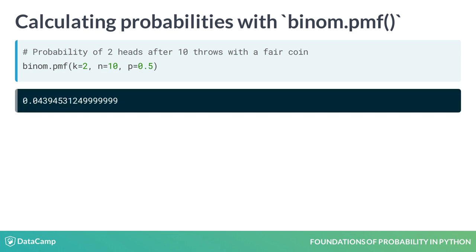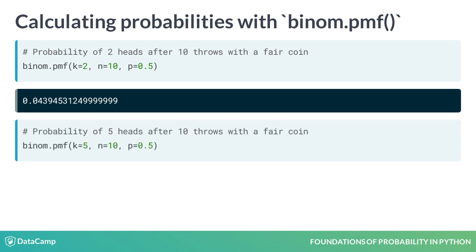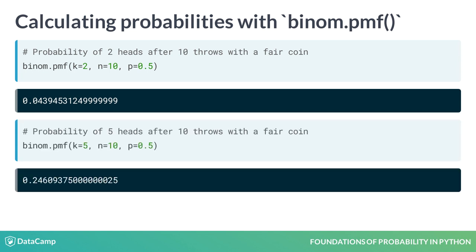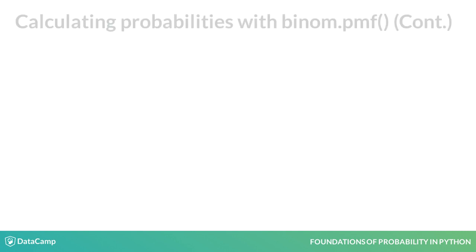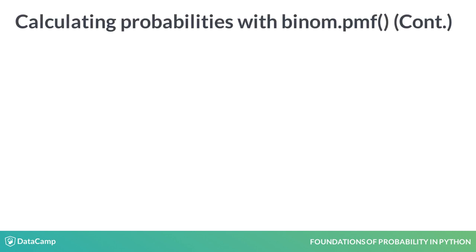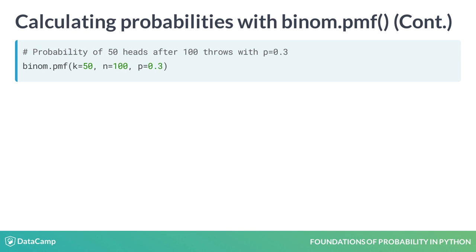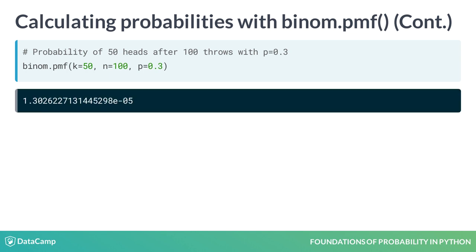you get the probability of getting 2 heads from 10 flips of a fair coin, which is 4%. The probability of getting 5 heads from 10 coin flips is almost 25%. The probability of getting 50 heads out of 100 flips of a biased coin with 30% probability of getting heads is extremely small, not even a 1% chance.